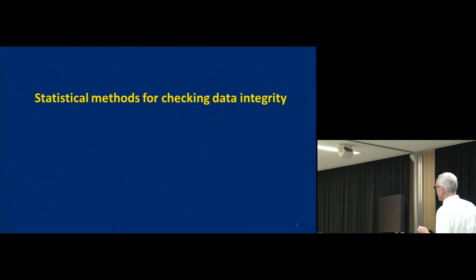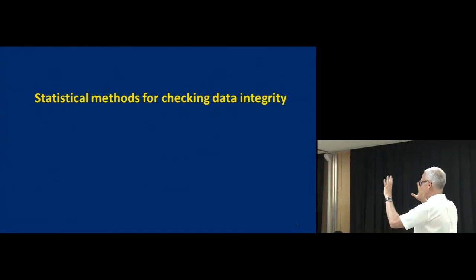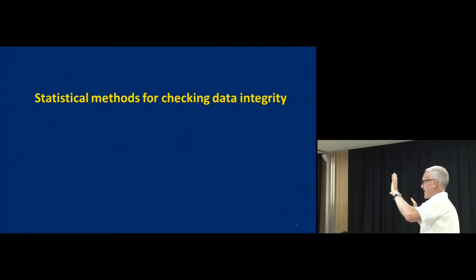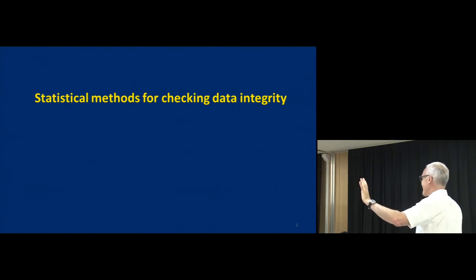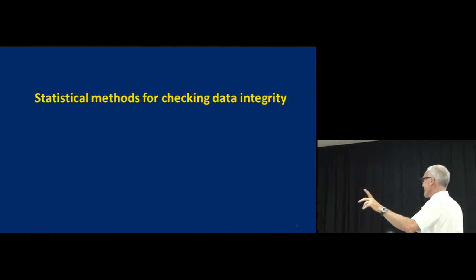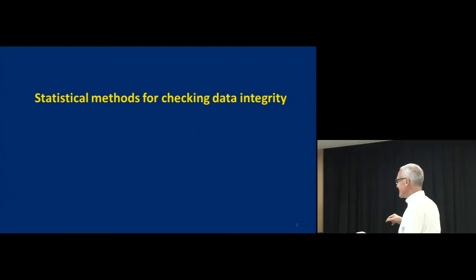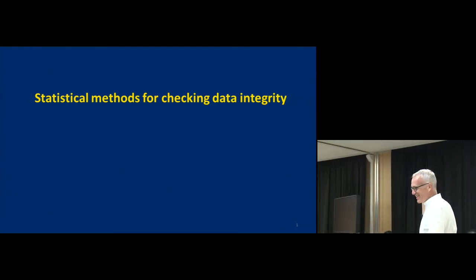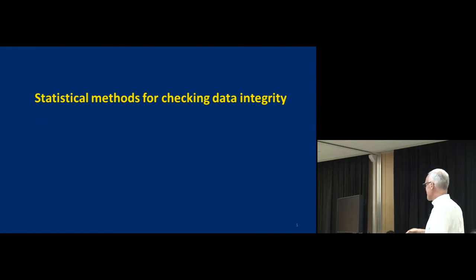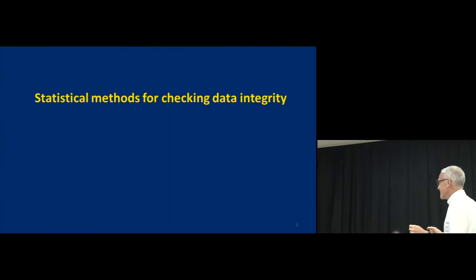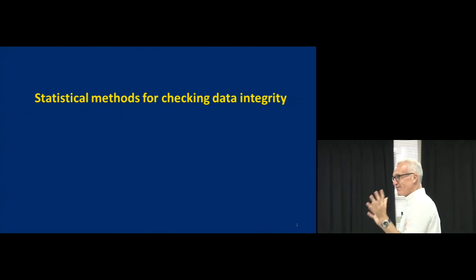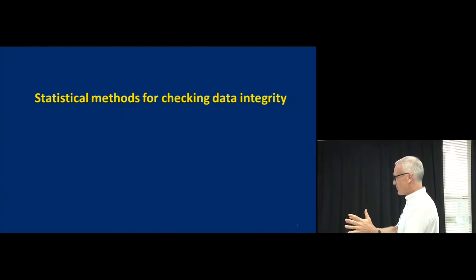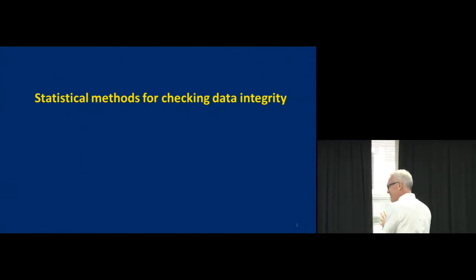So there are two times you're mainly involved in research: at the very beginning — usually it's a sample size estimate — and the answer is always 100, isn't it? They tell you they've got 100 patients, can you make my sample size estimate? So usually statisticians are involved at the very beginning to help with sample size estimations, and at the very end to help analyze the data.